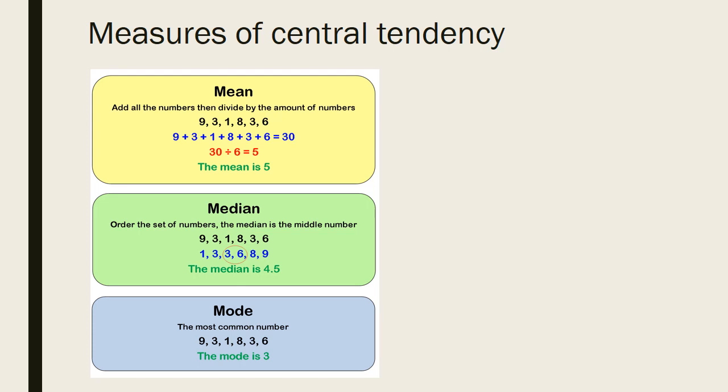In this example, n plus 1 would be 6 plus 1 which is 7 divided by 2 which is 3.5. As we can't find the 3.5 number, you calculate the average between the third and fourth numbers which in this case are 3 and 6. Hence, the median is 4.5.